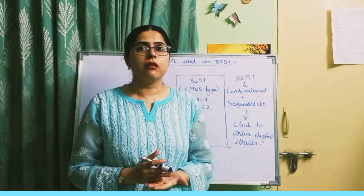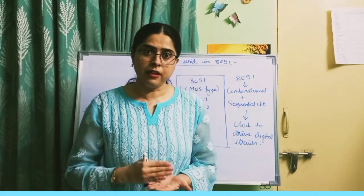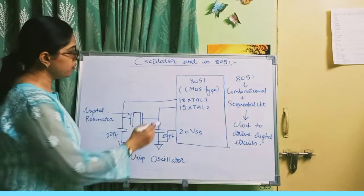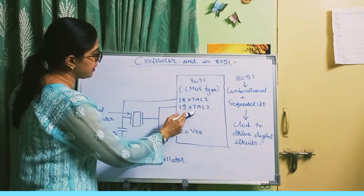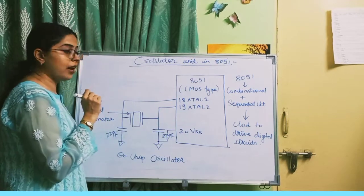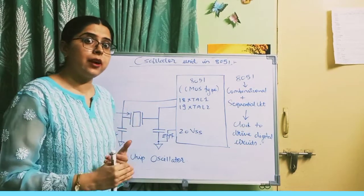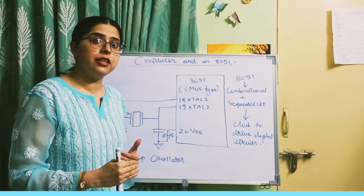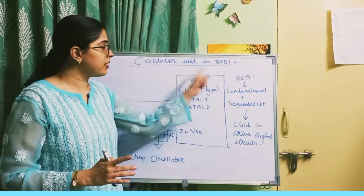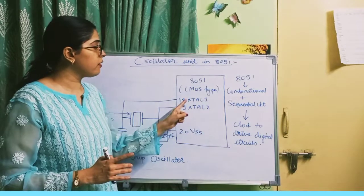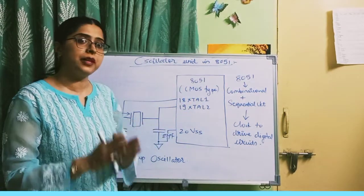How does this oscillator unit provide an external interface? Can you see these pins? XTAL1, pin number 18, and XTAL2, pin number 19. These two pins are used to provide the external interface. The oscillator unit inside the 8051 provides an external interface through XTAL1 and XTAL2 pins.